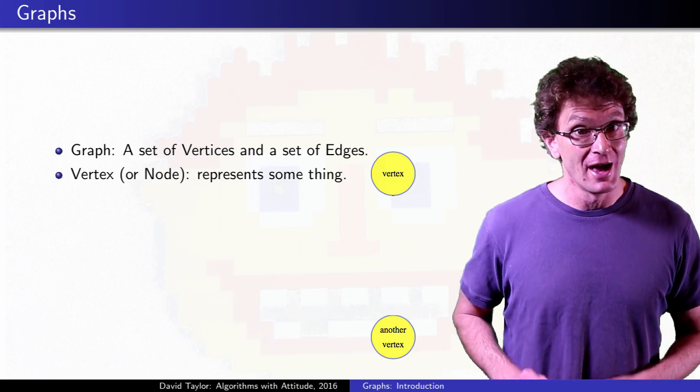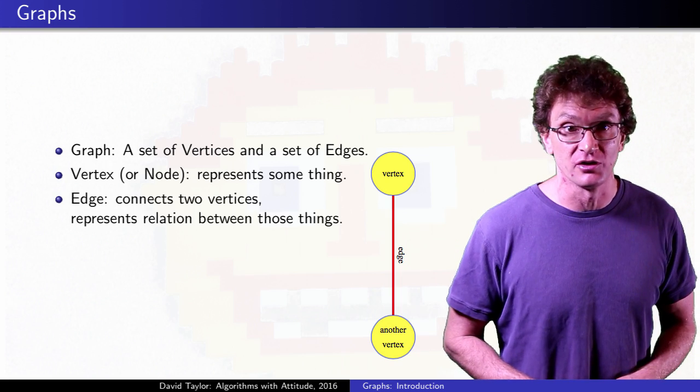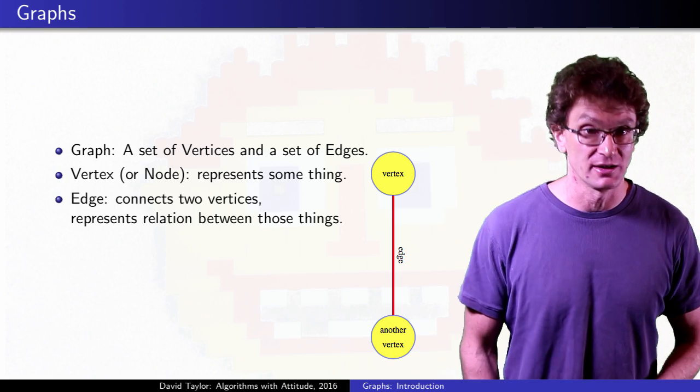Graphs are a set of vertices or nodes, and a set of edges between vertices. We usually draw edges as lines connecting vertices.